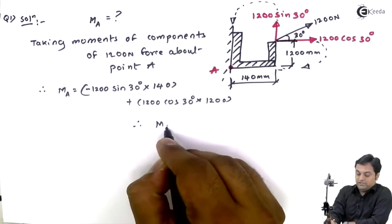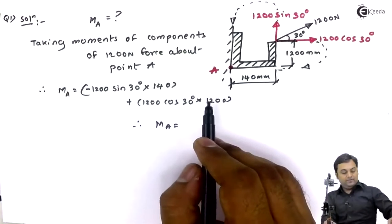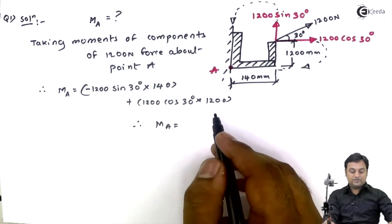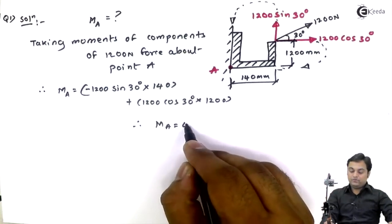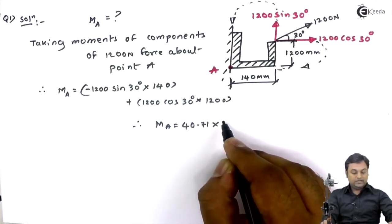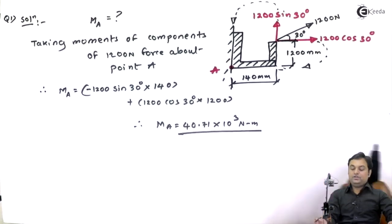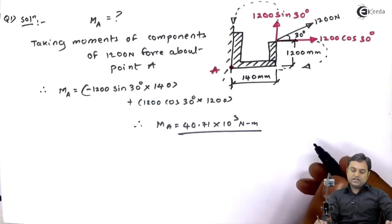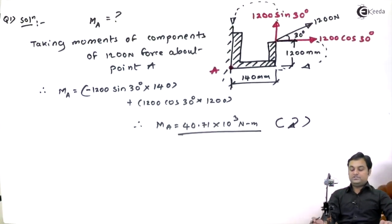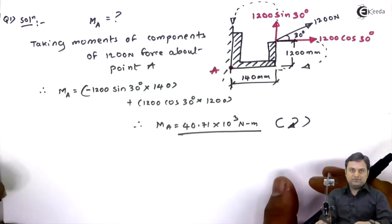Calculating all the values carefully, the moment at A comes out to 40.71 × 10³ Newton-millimeters. Since the answer is positive, the total effect is in the clockwise direction, and with this we have solved the question.